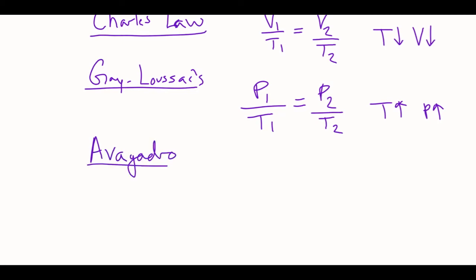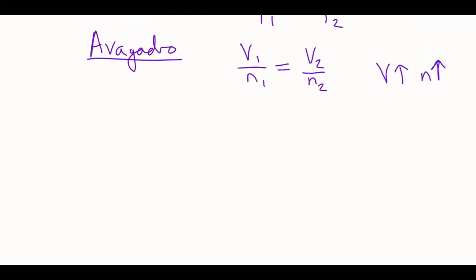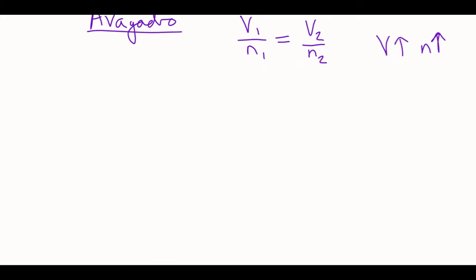Then we have Avogadro's Law. His law is V1 over N1 is equal to V2 over N2. This one's kind of like blowing up a balloon. If I add particles, which is moles, then I'm going to make the balloon bigger. So the volume is going to go up. Two more. I know there's a lot of these, all these different ones.